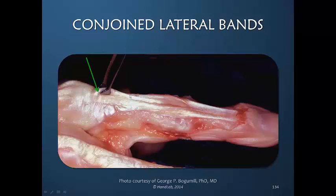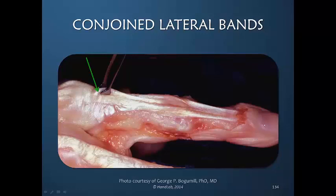One would assume that tension is transferred directly into the central slip insertion — we see tension here, but it doesn't continue distally. What we do see is that by pulling here, tension is being transferred to the lateral bands. This is a cadaver with no active muscle tension whatsoever. The tension looks redundant or extra long here because all the tension is being transferred to the lateral band. So even though the power of the central slip from the extensor digitorum communis works to help extend the finger, a portion of that power is distributed to the lateral bands during finger extension.